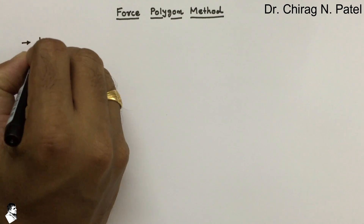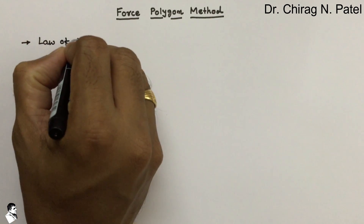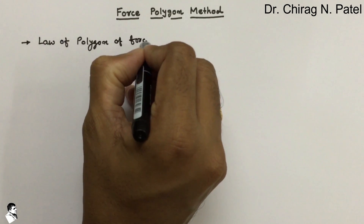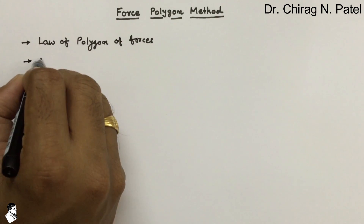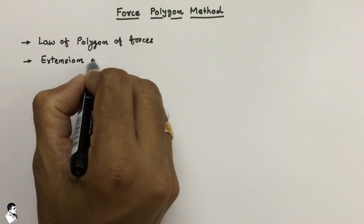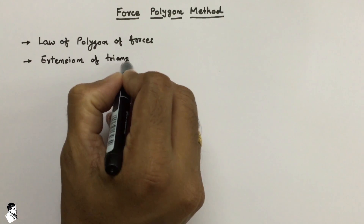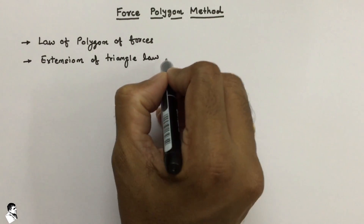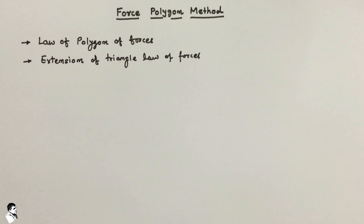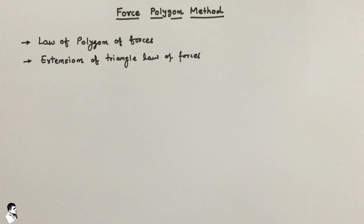This method is also known as the law of polygon of forces, and it is one type of extension of the triangle law of forces. The triangle law of forces is generally used for two forces, but the polygon law of forces is used for a number of forces to resolve the resultant of those particular given forces.